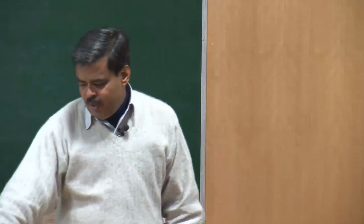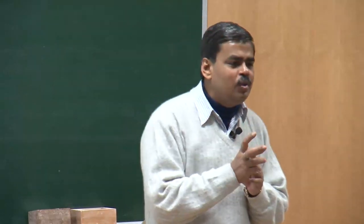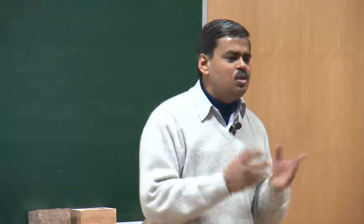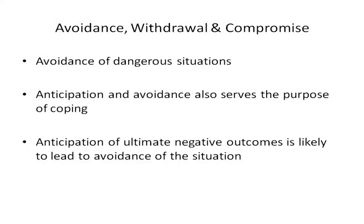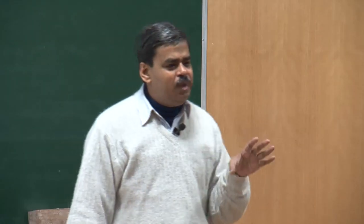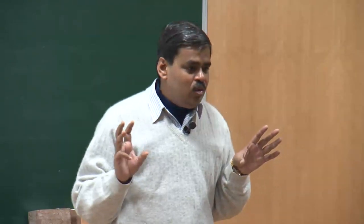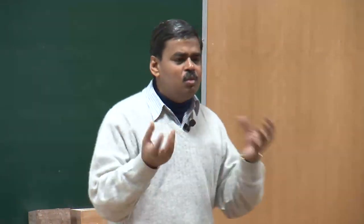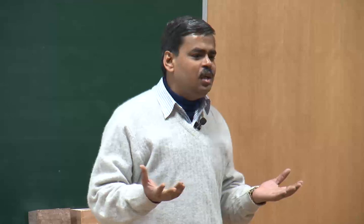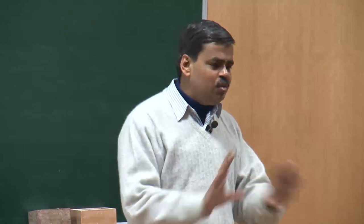If you are able to anticipate a danger, then you avoid the situation — here avoidance is used more like a coping module. You have to cope with the situation and you have used avoidance as a coping technique. Anticipation of an ultimately negative outcome is likely to lead to avoidance of the situation. If you are able to anticipate that the final outcome is going to be negatively loaded, we are all concerned about our ego structure and would not want negative outcomes to reach us. So if you can predict the negativity in the outcome, you decide it is better to quit right now — I would avoid this situation.